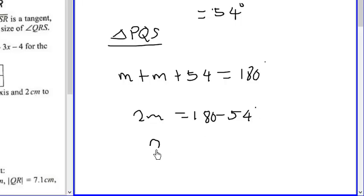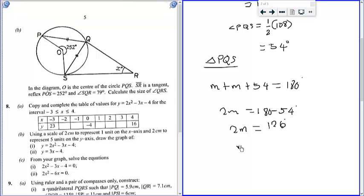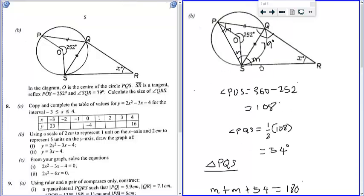So 2M is equal to 126 degrees. So M now will be equal to 63 degrees.